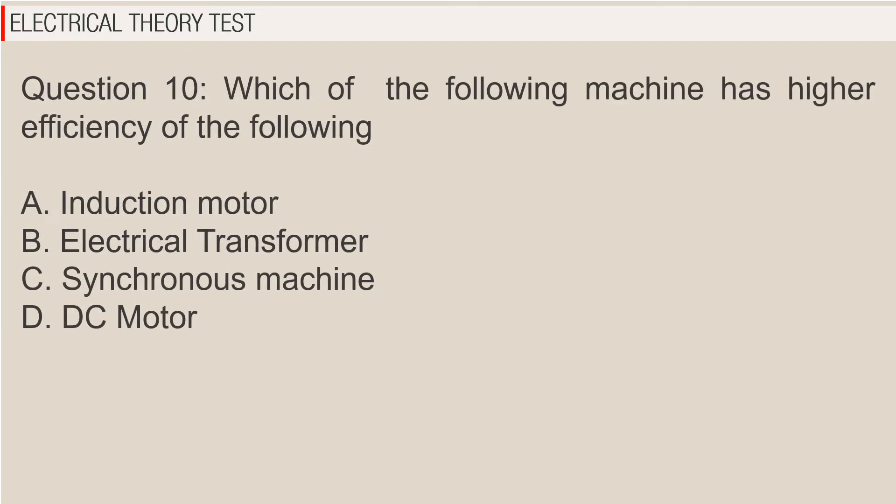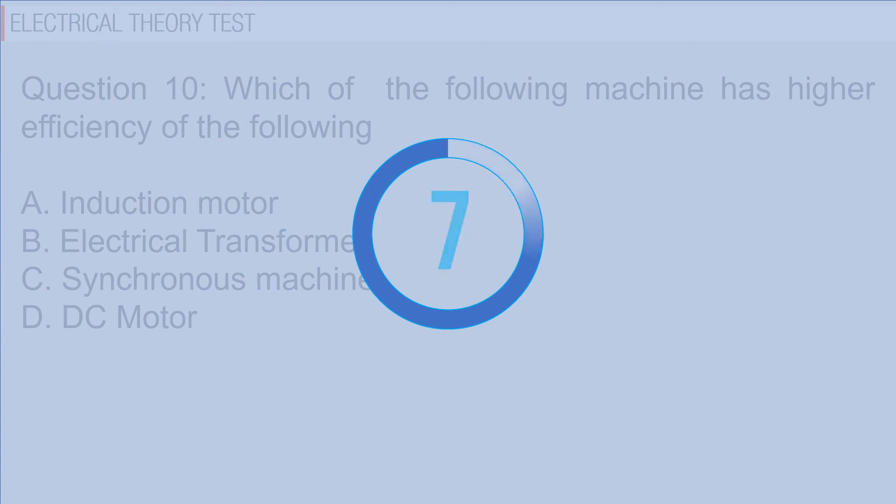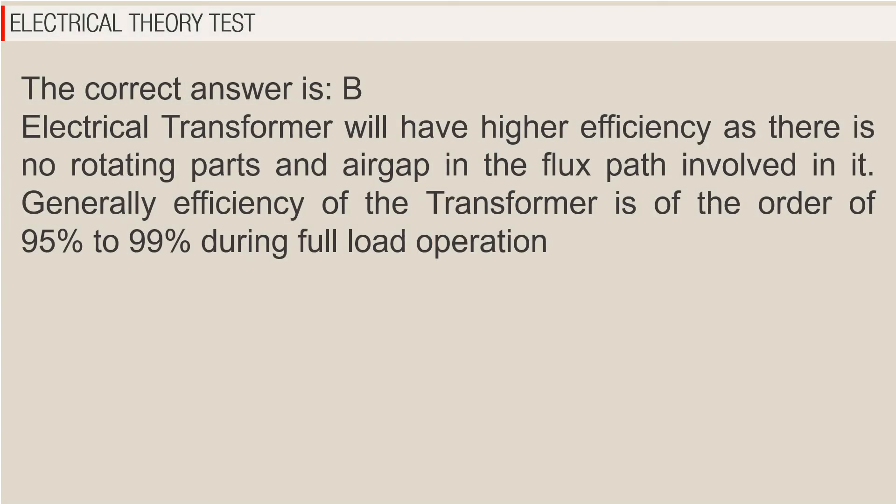Question 10: Which of the following machine has higher efficiency? A. Induction motor, B. Electrical transformer, C. Synchronous machine, D. DC motor. The correct answer is B. Electrical transformer will have higher efficiency as there is no rotating parts and air gap in the flux path involved in it. Generally efficiency of the transformer is of the order of 95% to 99% during full load operation.